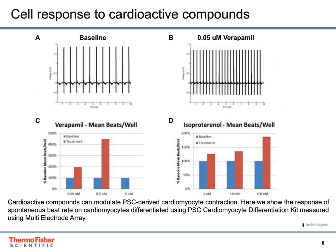This slide shows the cell response to cardioactive compounds. Cardiomyocytes generated using the PSC Cardiomyocyte Differentiation Kit were replated onto multi-electrode array plates. This data shows that these cardiomyocytes can be used to model changes in spontaneous beat rate caused by drugs that alter ion channel activity. The action potentials shown represent the basic physiological function of the heart. Graph A shows the baseline versus the effect of two drugs that induce tachycardia: an L-type calcium channel blocker and a beta adrenergic receptor agonist.